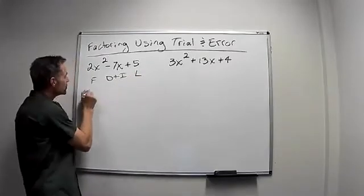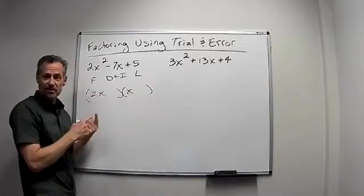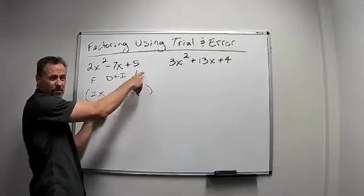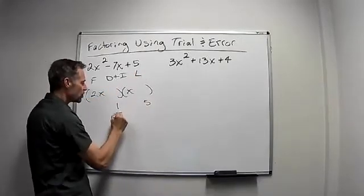So I know for the first, it has to be 2x times x. That's the only way I'm going to get 2x squared. These two have to multiply to the 5. So I only have two options since that's prime. It's either a 1 and a 5 or a 5 and a 1.